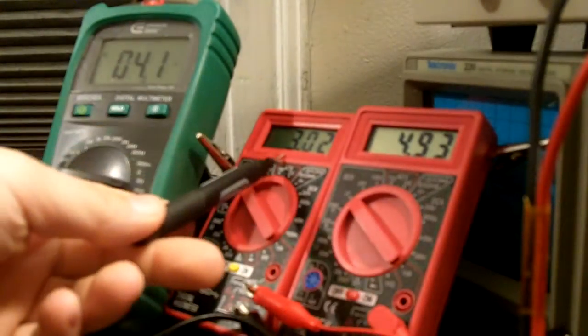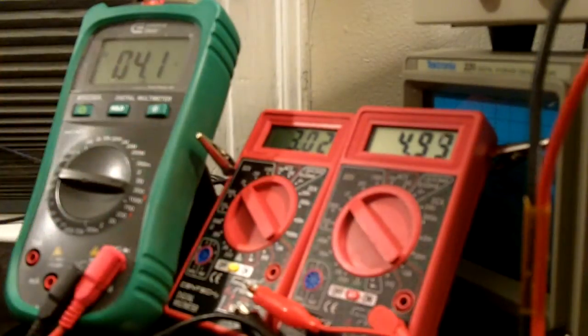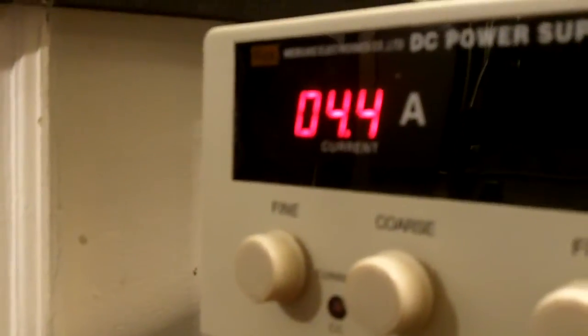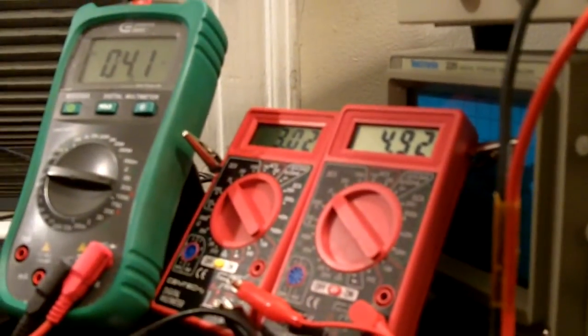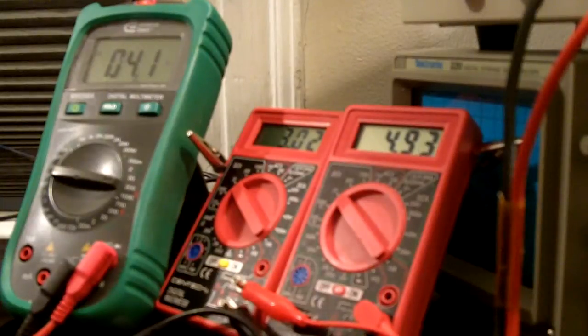So you can see we're right around five volts for the load, three amps going to the diode, 4.1 volts input, and we are drawing at 4.1 volts only 4.4 amps with a five volt load at three amps. That's pretty efficient in my opinion.